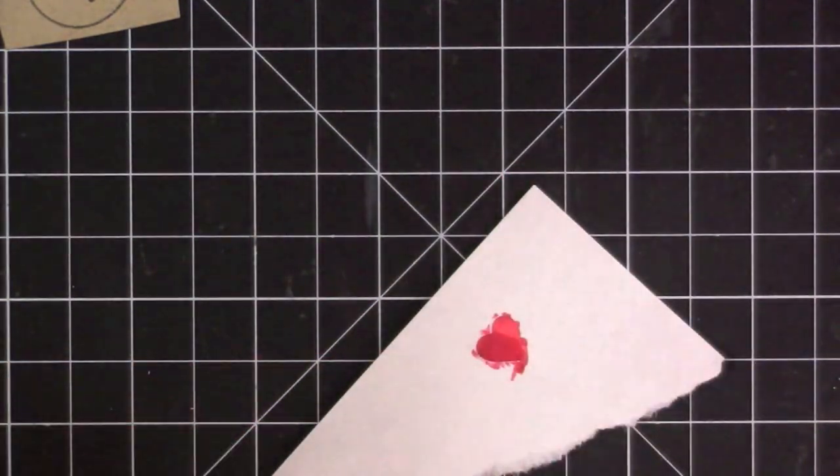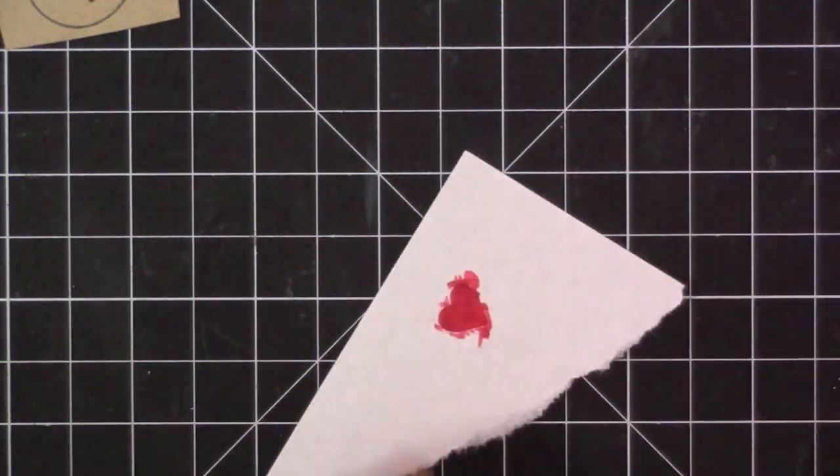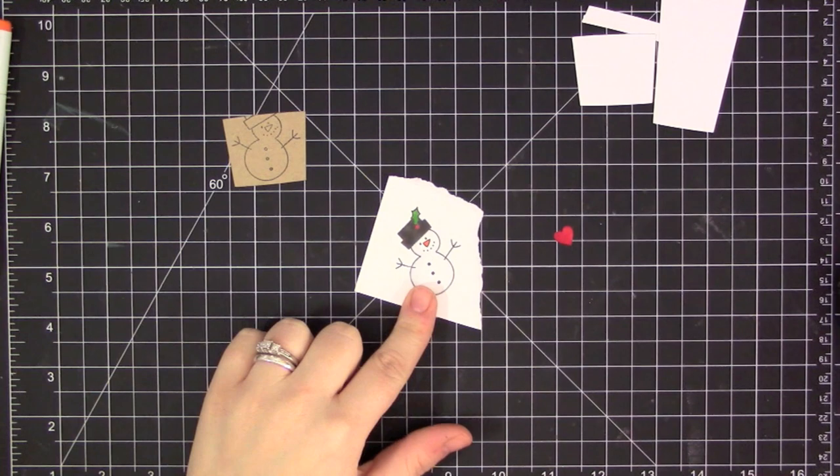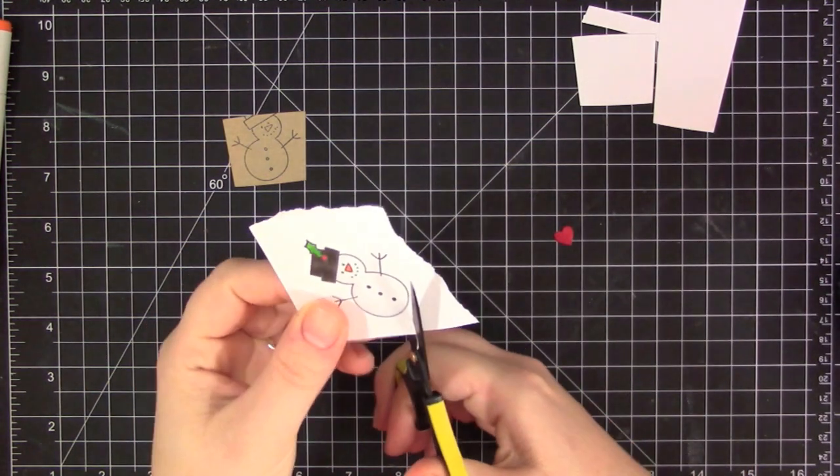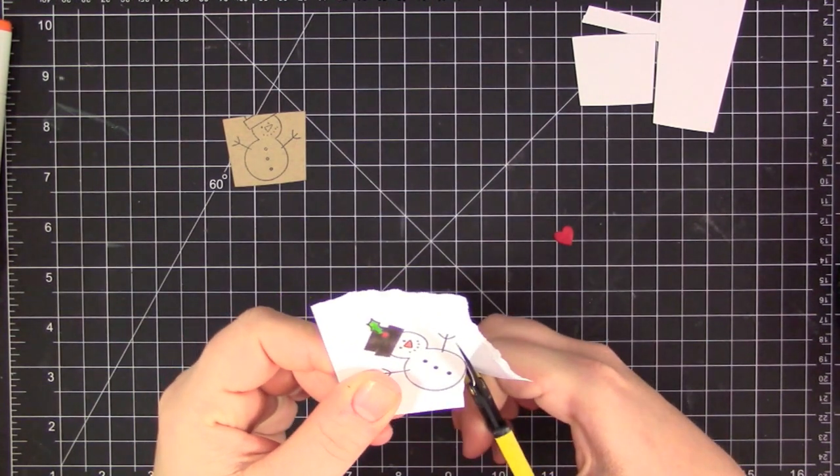Now I'm coloring one of the heart images that come with the Coffee Cup Die-namics. This is the smaller heart, and I'm just adding some red Copic marker onto that—two colors—just with a tiny bit of shading. And I'm going to be adding this to the snowman once I have him adhered onto the card.